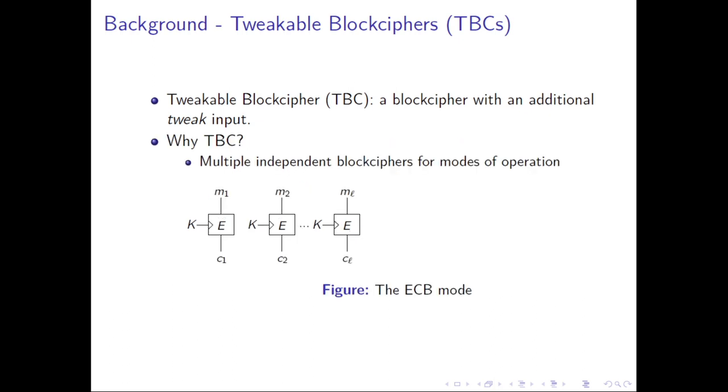The tweakable block cipher has two inputs. The first input is a tweak, the second input is a plaintext X, and it outputs Y. By using lambda different tweaks, we will have lambda different block ciphers from such a single tweakable block cipher. This is the motivation of a tweakable block cipher.